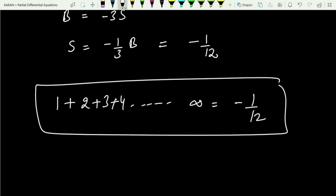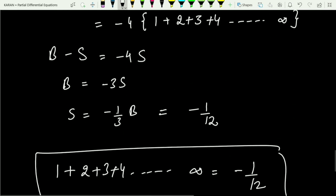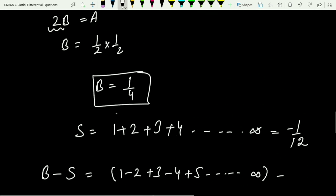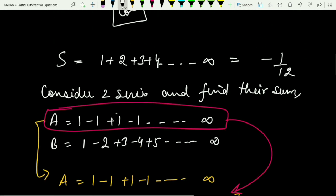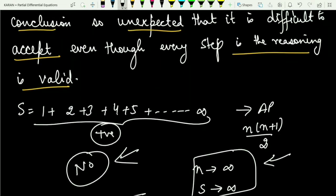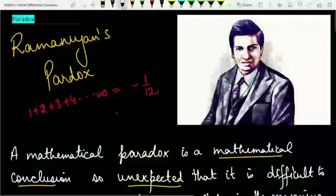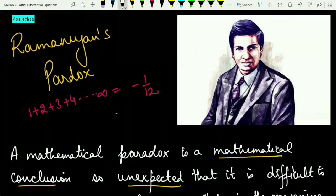So we have proved that the sum 1 plus 2 plus 3 plus 4 and so on to infinity equals minus 1 by 12. This is Ramanujan's Paradox — one of the most interesting and applicable paradoxes used in higher mathematics. A mathematical paradox is a mathematical conclusion so unexpected that it is difficult to accept, even though every step in the reasoning is valid. A great tribute to the greatest mathematician of all time, Srinivasa Ramanujan. Thank you for watching; do subscribe and press the bell icon.